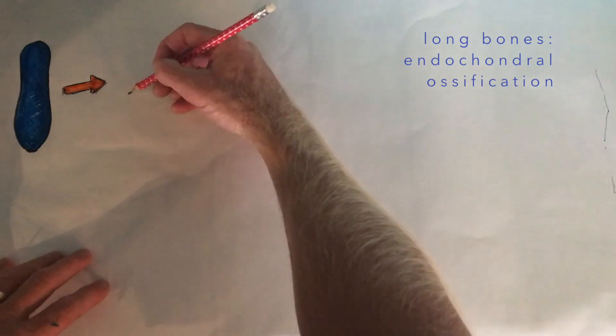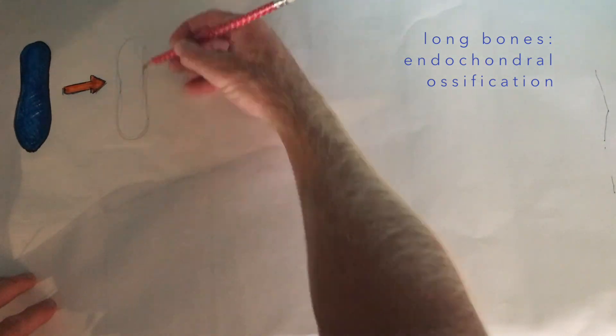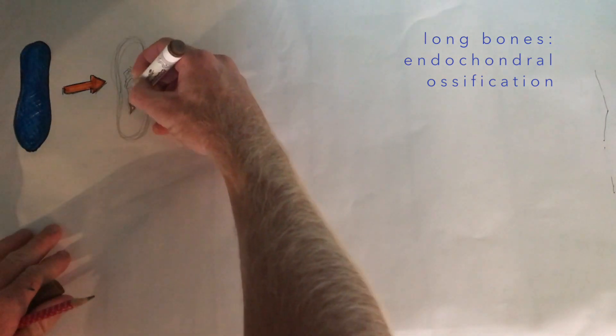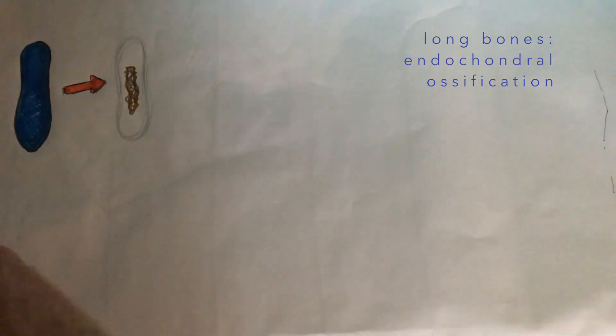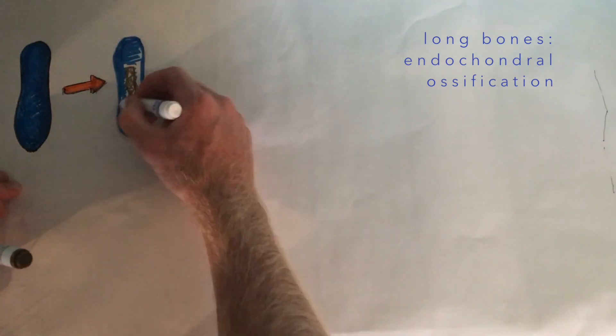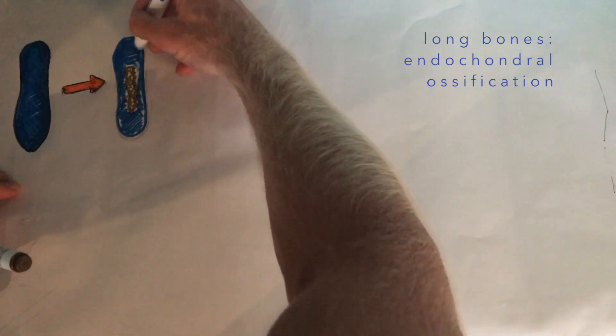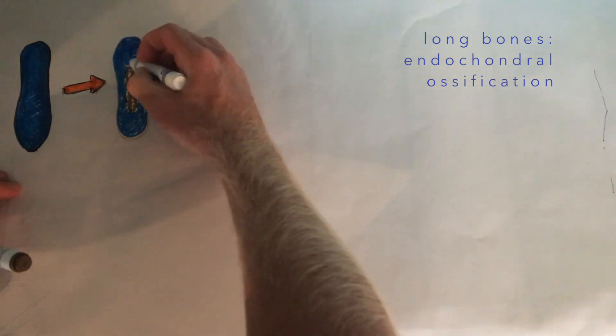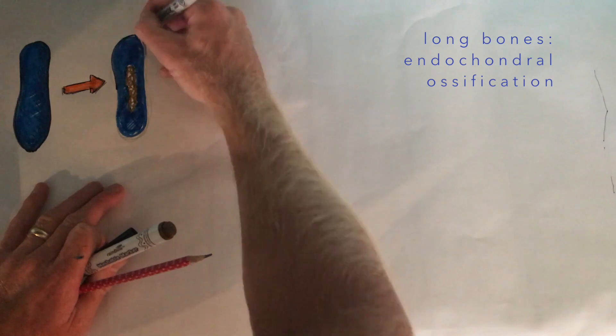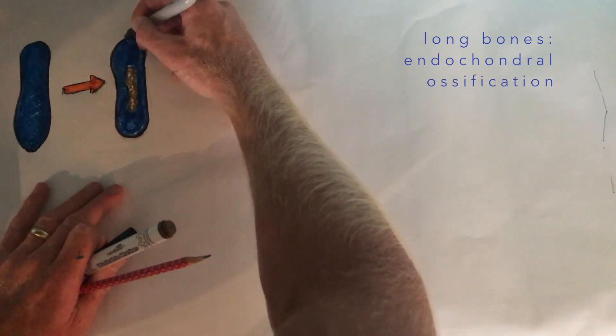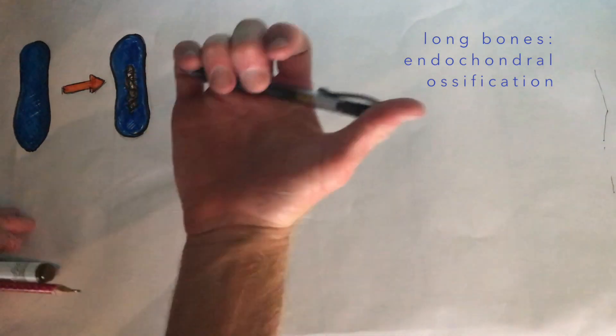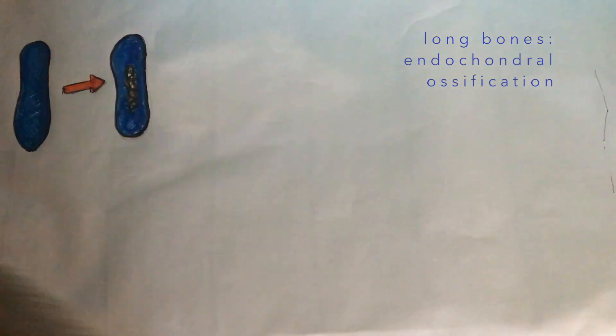This occurs right in the diaphysis, in the shaft of this hyaline cartilage template. Those chondrocytes, the living cells that secreted the cartilage and collagen, will enlarge, calcify, and die. This creates room for osteoblasts to move in and start secreting true bone tissue. Right in the middle of the shaft of the long bones is where you'll get the first section of this true bone tissue.